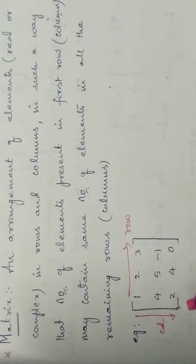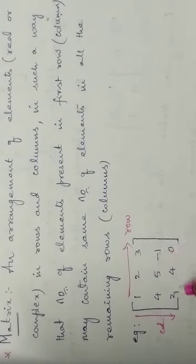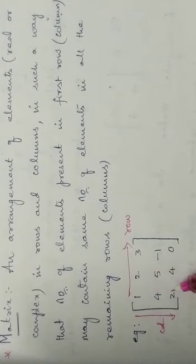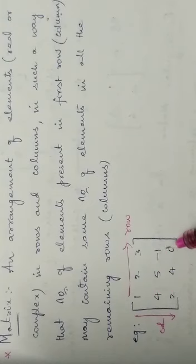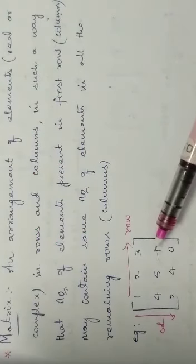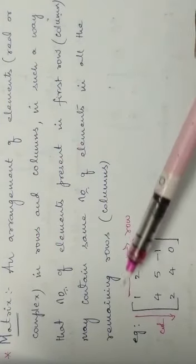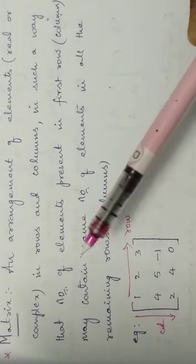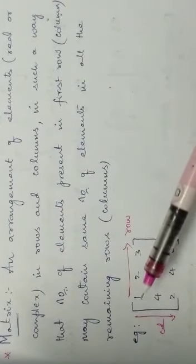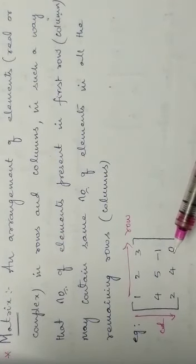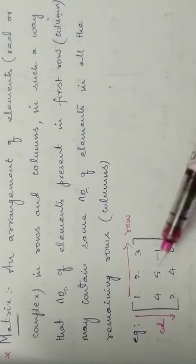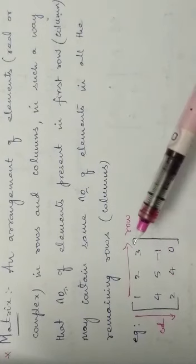9 elements are arranged in 3 rows: first row, second row, third row. And in how many columns? First column, second column, third column. These are real elements — these 9 real elements are arranged in 3 rows and 3 columns.